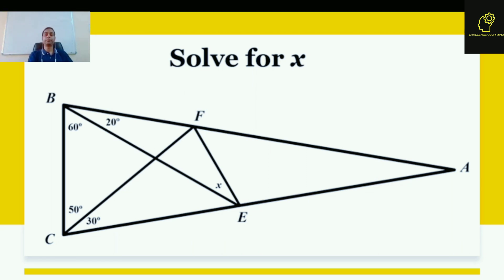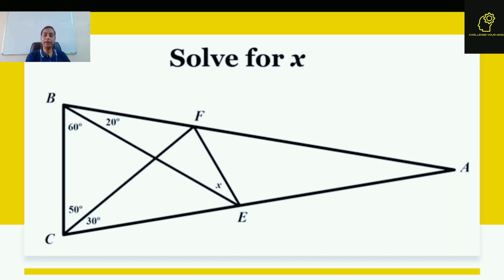Hello students, in this video I am going to discuss a very interesting problem of geometry. Given that in triangle ABC, angle ABC is equal to 80 degrees and angle ACB is again equal to 80 degrees.